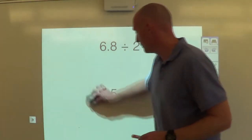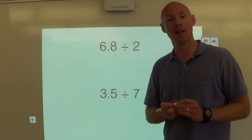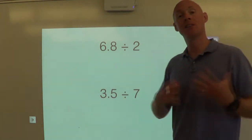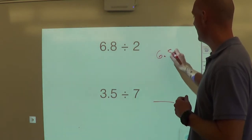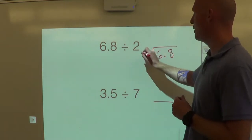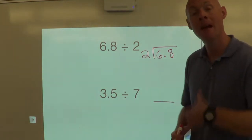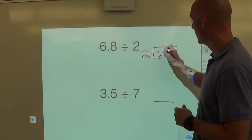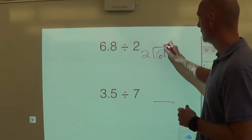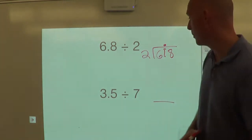Let's say we have 6.8 divided by 2. Step number one, set up the division problem. 6 decimal point 8, we're going to divide that by 2. Perfect. Step one is done. Step two, you're going to take that decimal and bring it up into the quotient. Perfect. Step three, divide as normal.